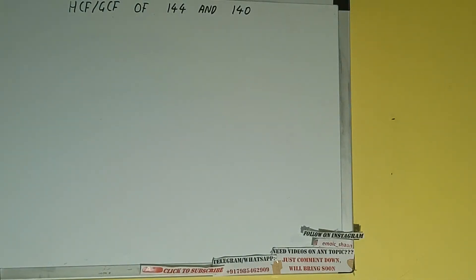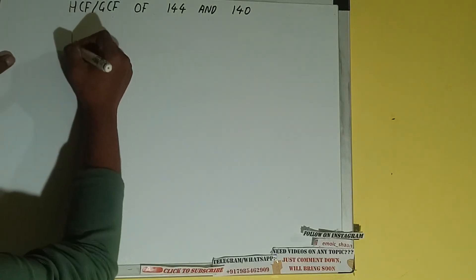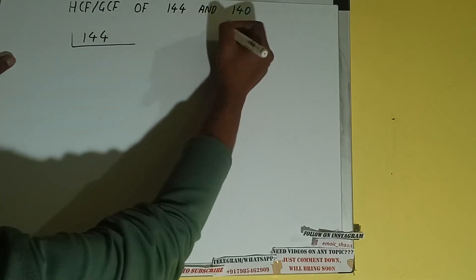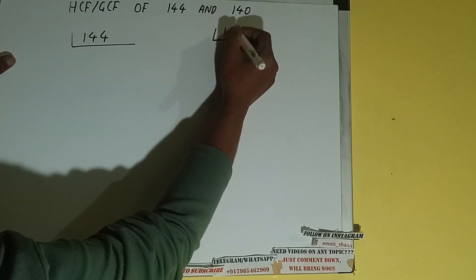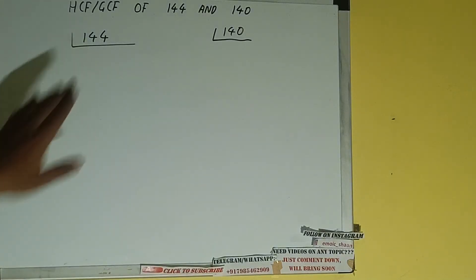Hello friends, in this video I'll be helping you with the HCF or the GCF of the numbers 144 and 140. So let's start. First of all, we need to do the prime factorization of each of the numbers separately — first we'll do it for 144 and then we'll do it for 140.